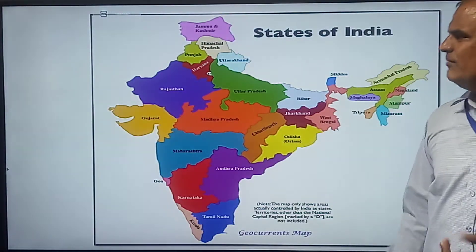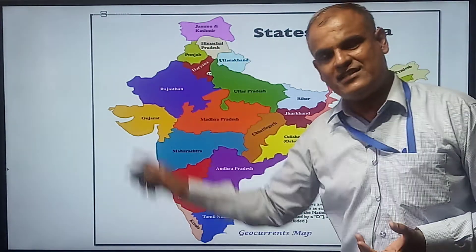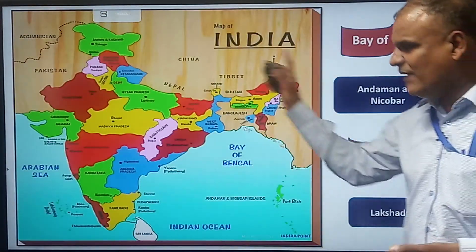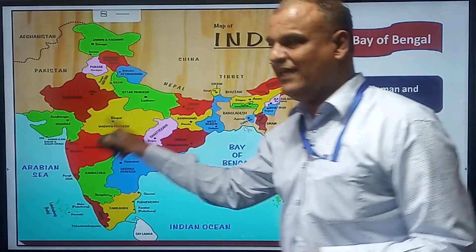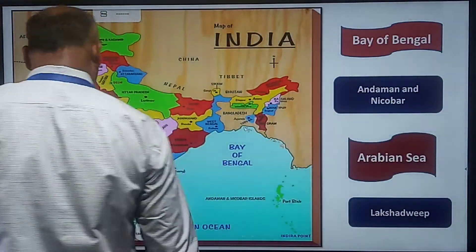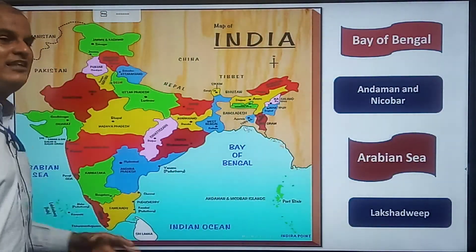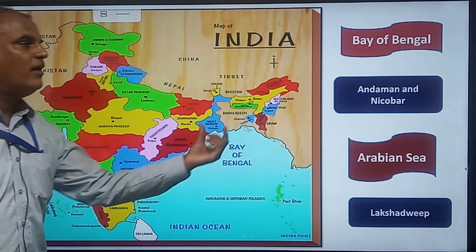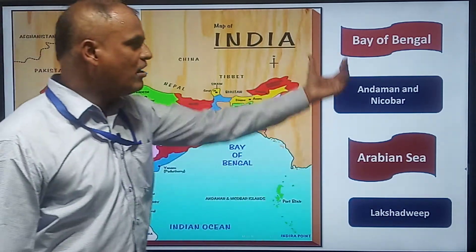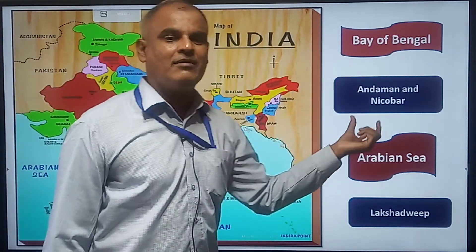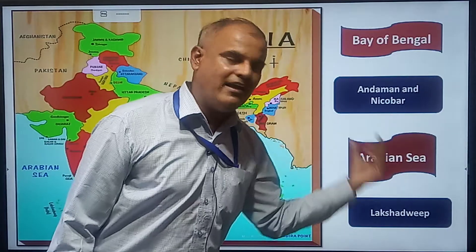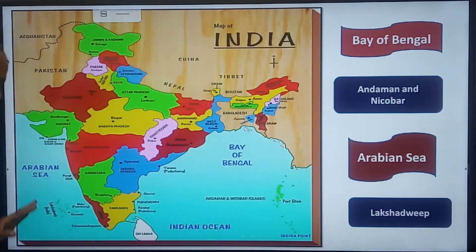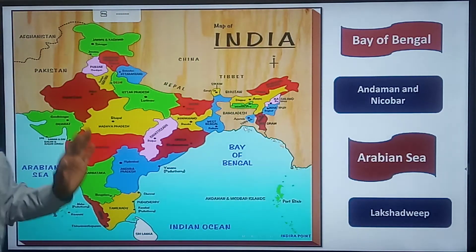This map shows the states of India and illustrates that India is surrounded by three water bodies — one ocean and two seas. The Arabian Sea is to the west, and the Bay of Bengal is to the east. Our island in the Bay of Bengal is Andaman and Nicobar, and in the Arabian Sea it is Lakshadweep.